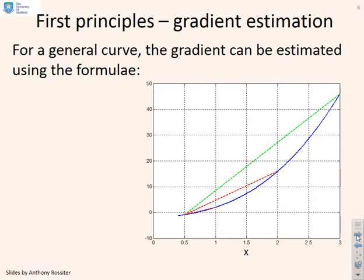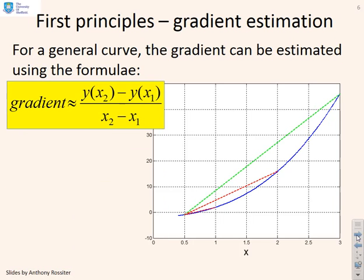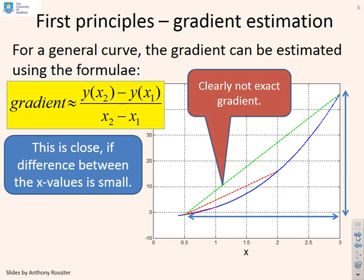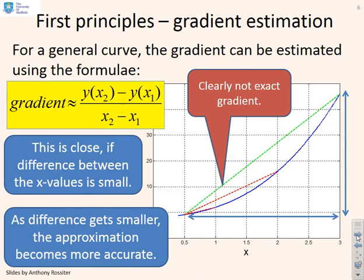So, first principles. For a general curve the gradient can be estimated using this formula - that's what we've just shown - but it's not exact. What we can see is the approximation gets better if the difference between the x values is small. If we had a large difference in the x values we get a big error.